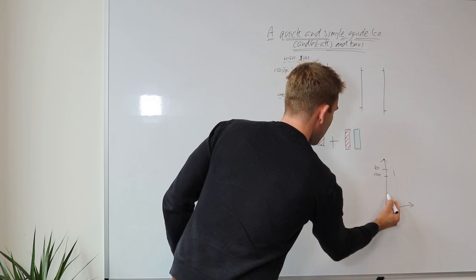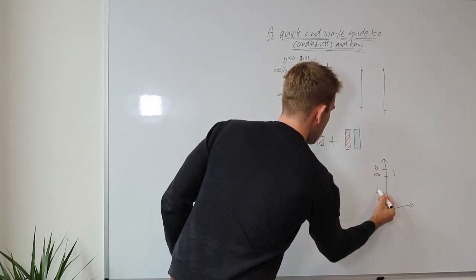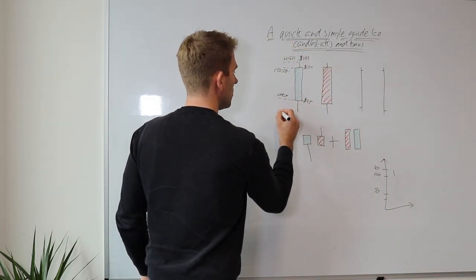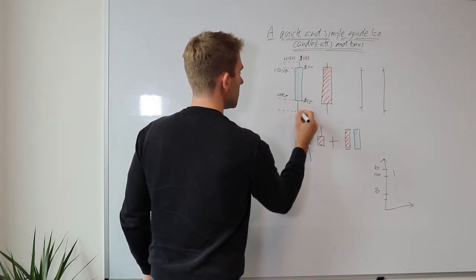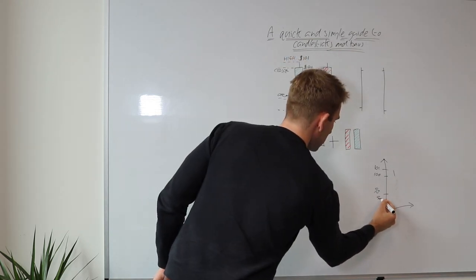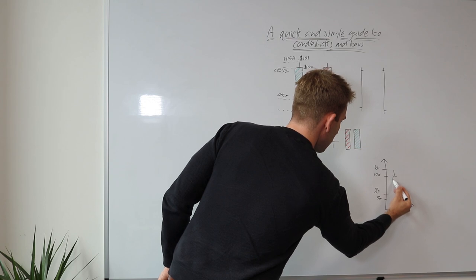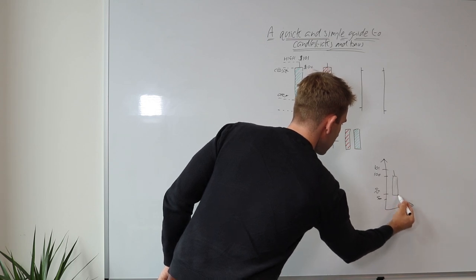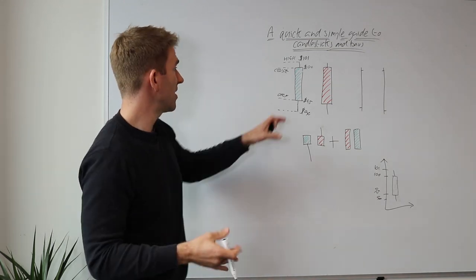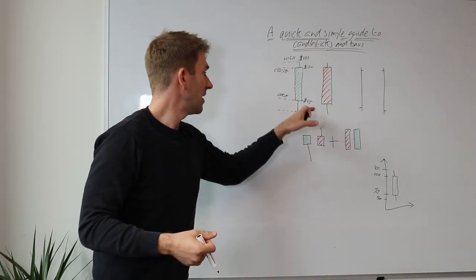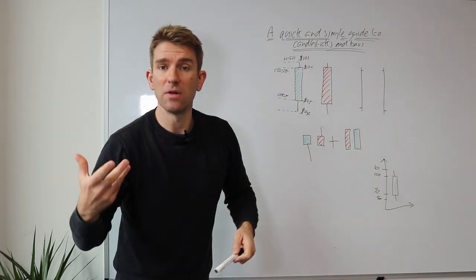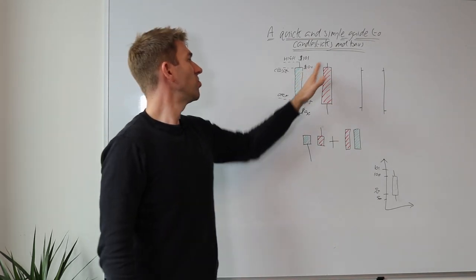So we've got $95 open and $100 close, with a high of $101. The lowest the stock went in the trading day — let's say $90 — is plotted at the bottom as the tail. So the shape of our candlestick shows a high of 101, a low of 90, open at 95, and close at 100.